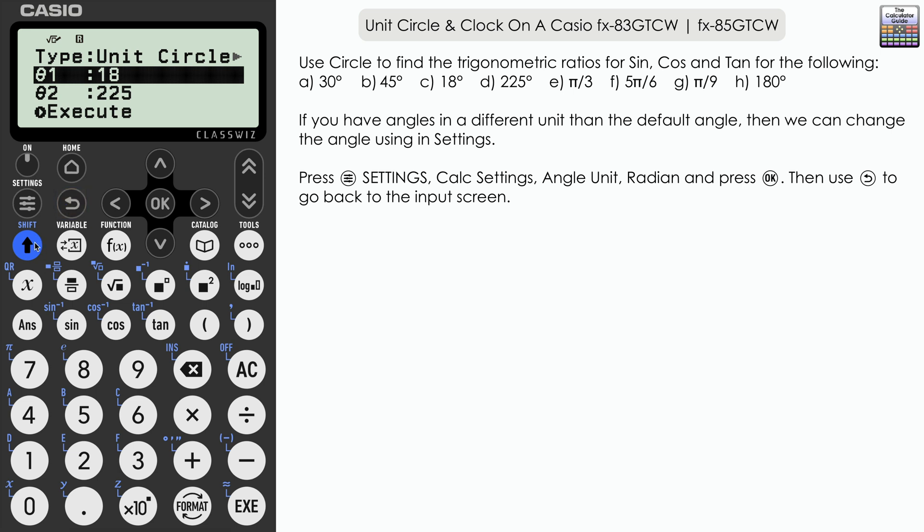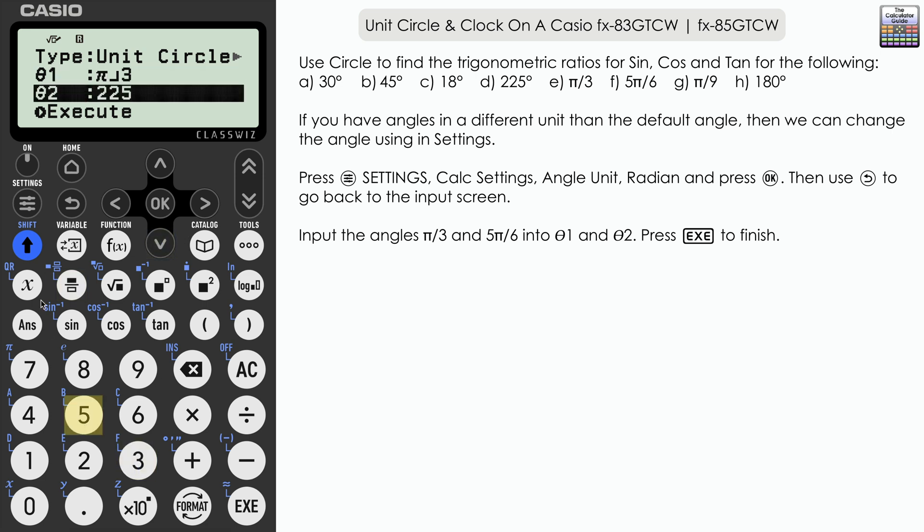Let's try two angle measurements in radians. I'm going to go for pi over three and five pi over six. Once you've done that, press execute. You can see here theta one pi over three, we've got the exact trigonometric ratios there. Navigate down for theta two, five pi over six, and once again we've got exact trigonometric ratios.